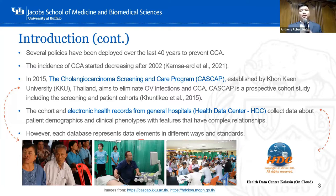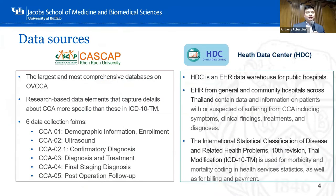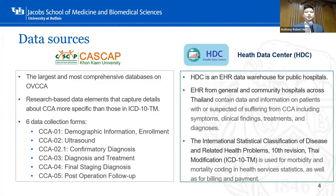The cohorts and electronic health records in Thailand collect data about patient demographics and clinical phenotypes with features that have complex relationships. Each database represents data elements in different ways and standards. These are the two main data sources for CCA in Thailand. The first is the Health Data Center, which is the EHR data warehouse for public hospitals across the country. It contains information about patients with or suspected of suffering from CCA, including symptoms, clinical findings, treatment, and diagnosis. The HDC uses ICD-10 type modification version as its standard.